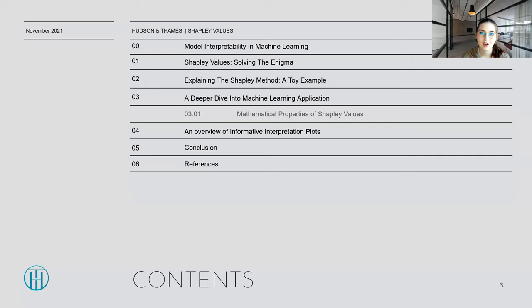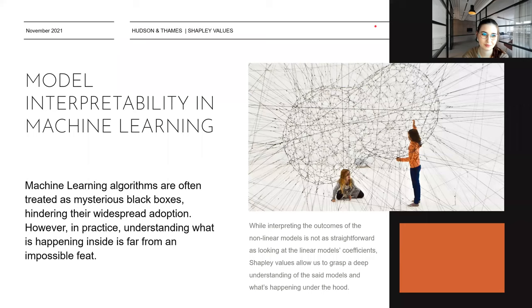Today we're going to be talking about the model interpretability of machine learning algorithms as well as the Shapley Values as the solution to this machine learning enigma. We're going to be explaining the method on a toy example of housing prices and also talking about the steps of the Shapley Value evaluations in machine learning applications. We're also going to be discussing the exceptional mathematical properties of Shapley Values and giving a short overview of informative interpretation plots. We'll wrap everything up with a conclusion section and references. So, without further ado, let's start.